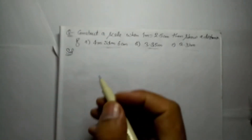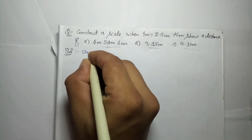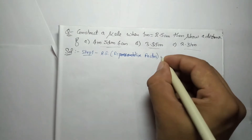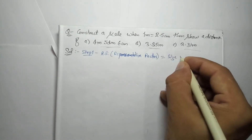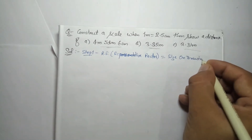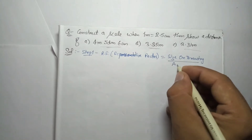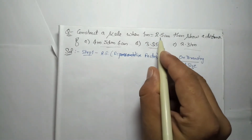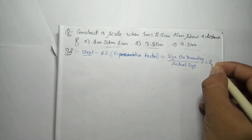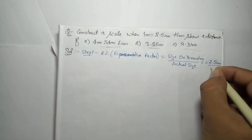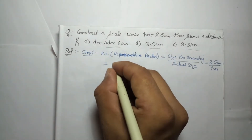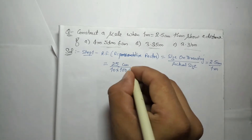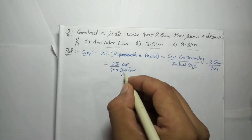Step 1: find the RF (Representative Factor), which equals size on drawing divided by actual size. Here, 1 meter equals 2.5 centimeters, so RF = 2.5 centimeters divided by 1 meter. Simplifying: 25 divided by 10 meter into centimeter, times 100 centimeters, so centimeter cancels and we get 1 by 40. That is why RF has no unit.